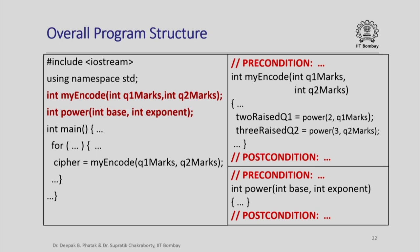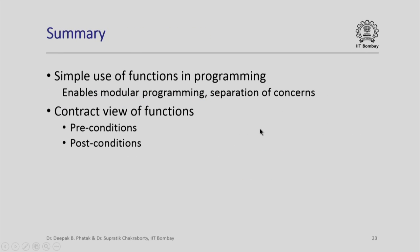Here is how the overall program structure looks: I declare two functions specifying what arguments they take and what values they return. The main function calls my_encode with two arguments. My_encode has its own preconditions and postconditions and in turn invokes the power function. The power function has its own preconditions and postconditions and raises the base to the exponent and returns that value. In summary, by using functions we can do modular programming, separation of concerns, solve a small subproblem in a function and use that solution in a larger subtask, and we have seen the contract view of functions — specifying preconditions and postconditions is all we need to know when invoking a function.